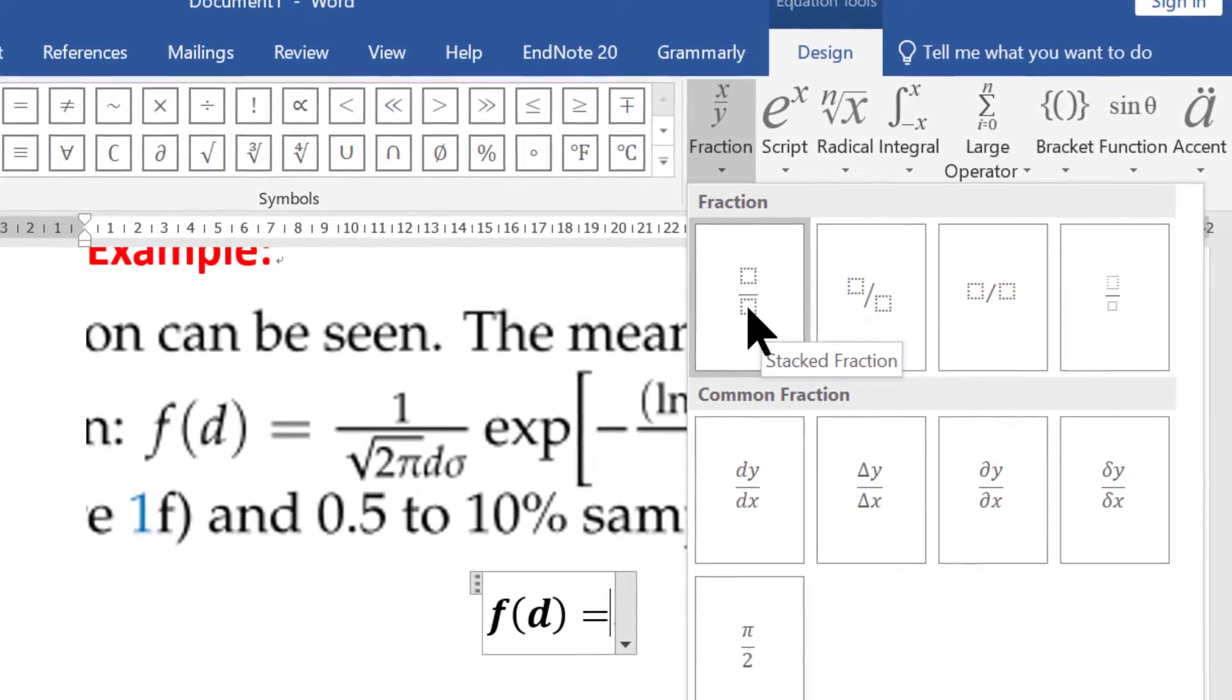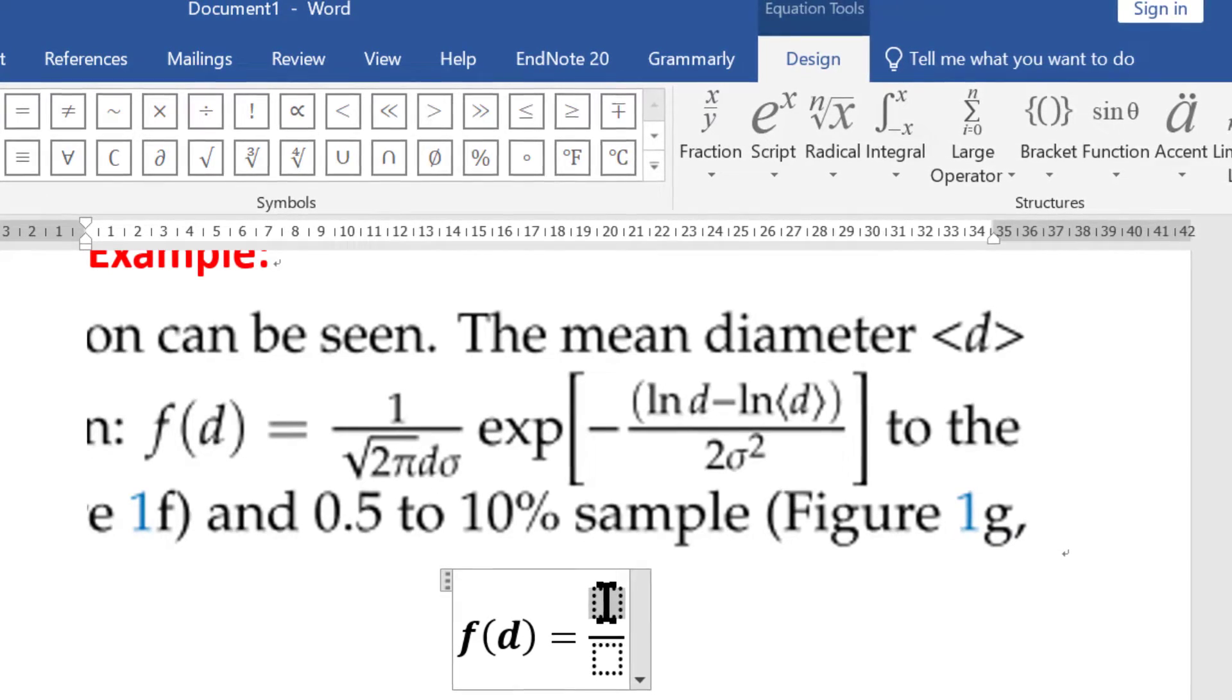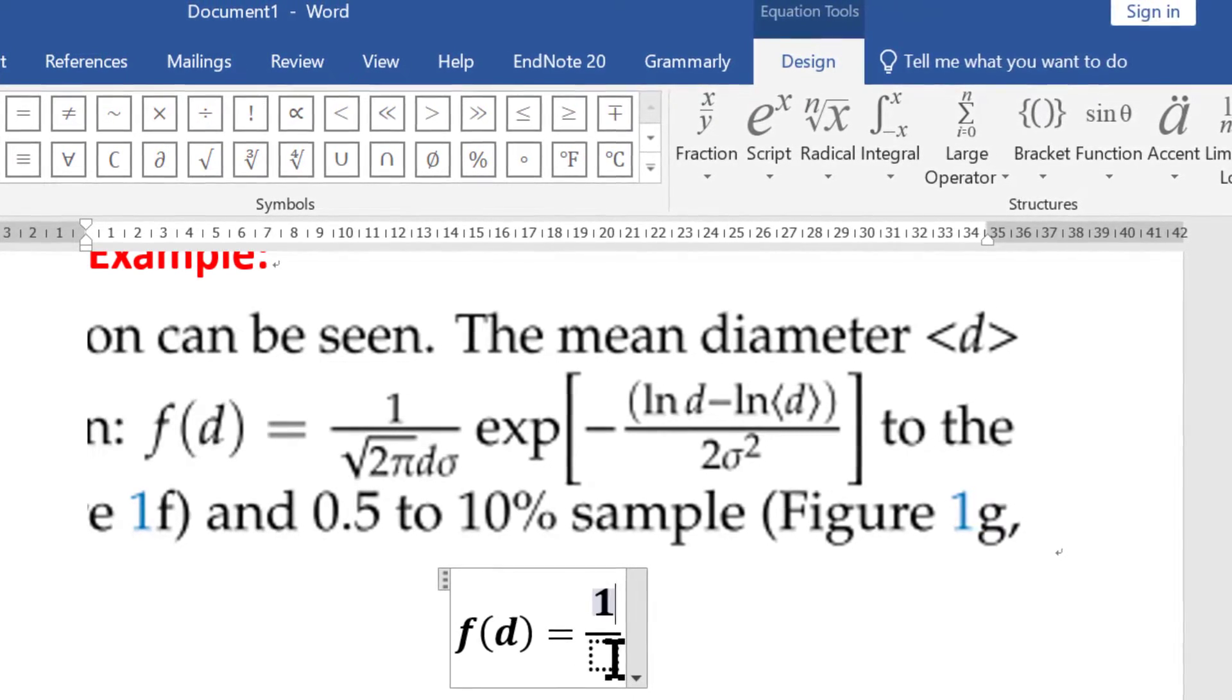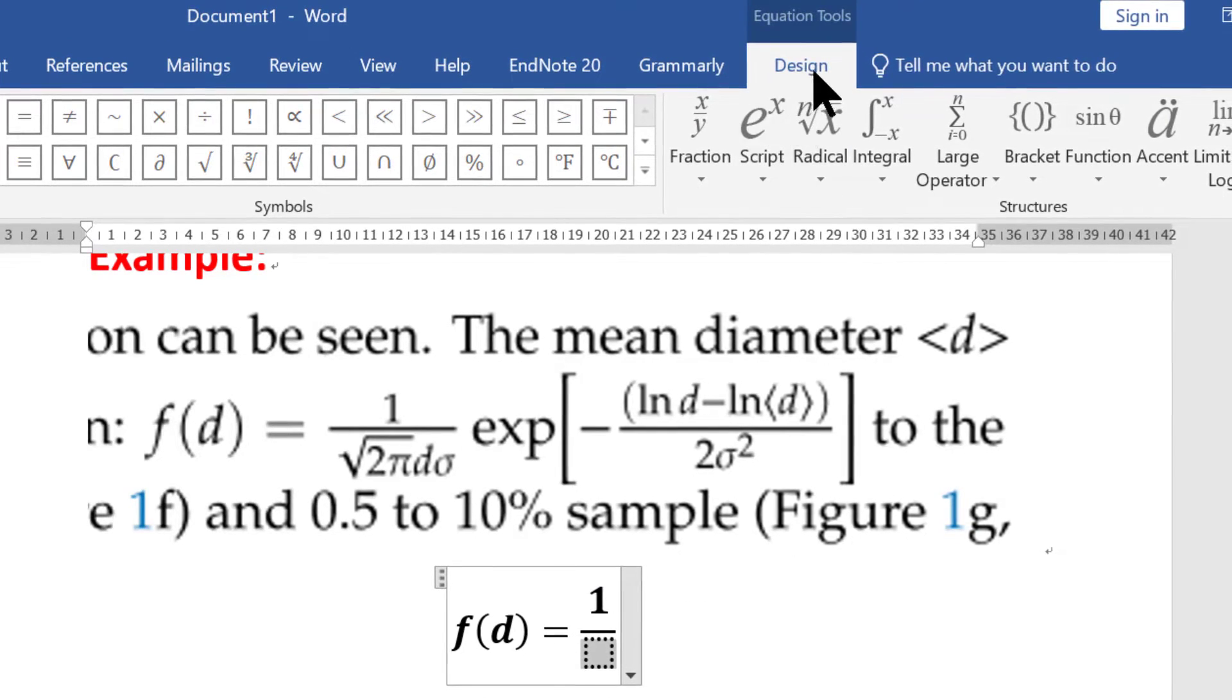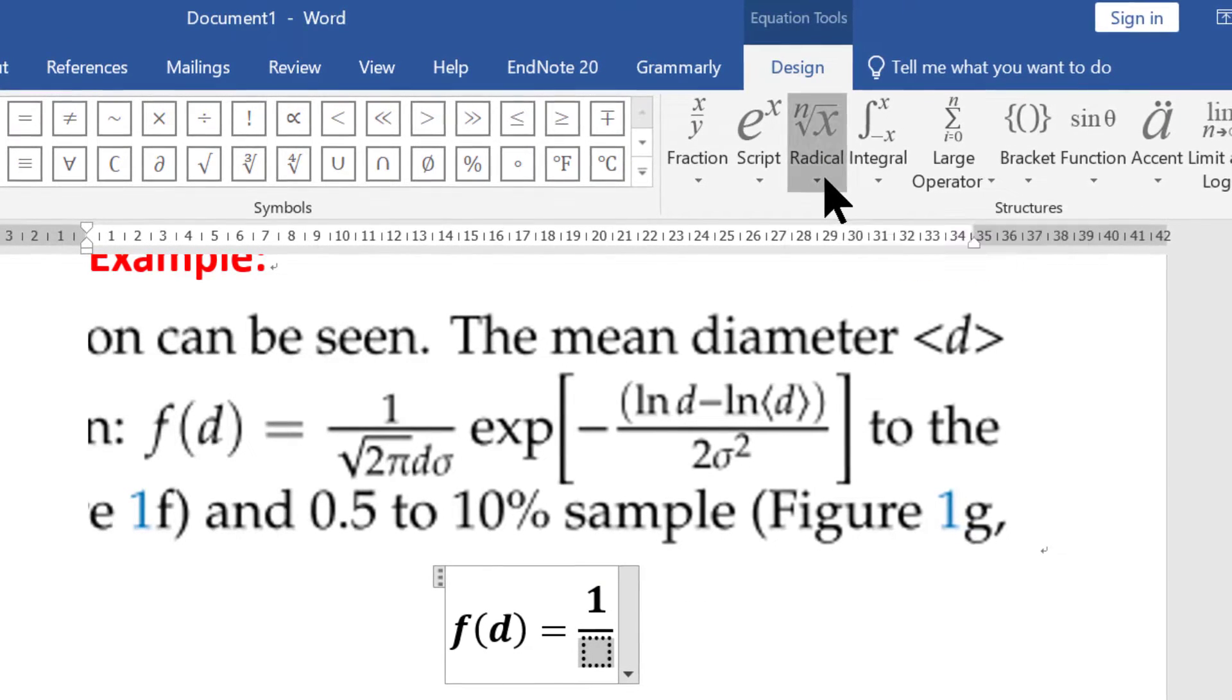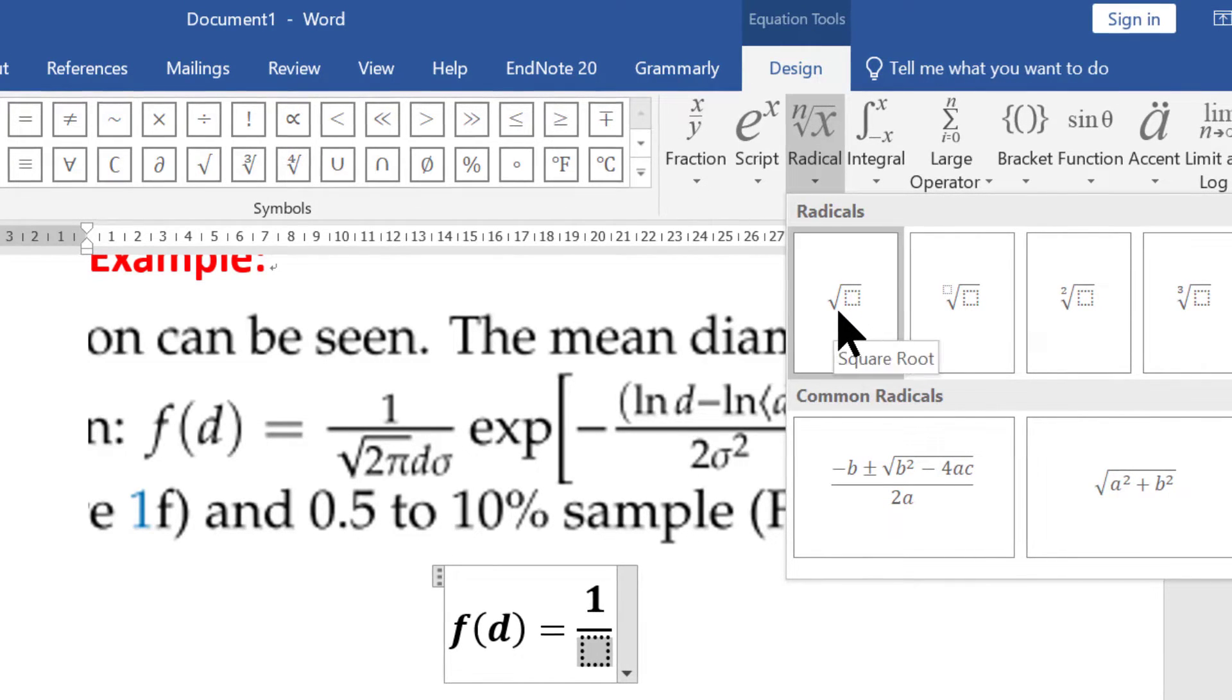I'll be considering option one in this case. This is one. In the denominator you have square root of 2π, so again you can go to the Design, and you can see the third option is for square root. Again, there are four different options.